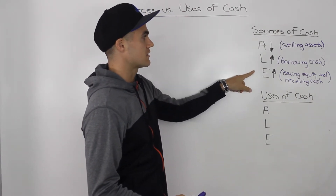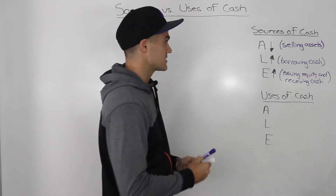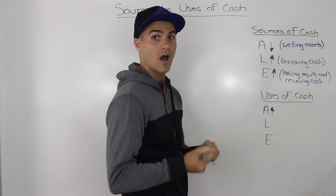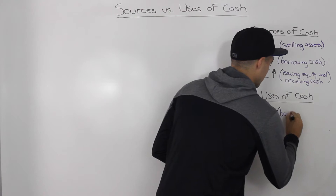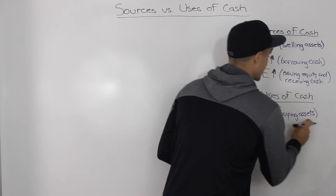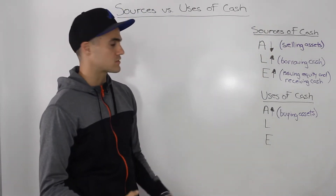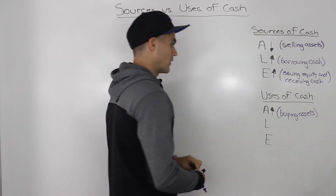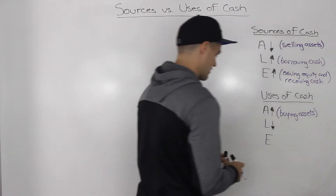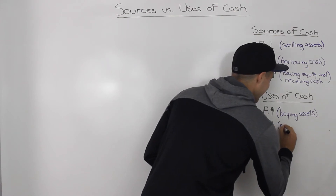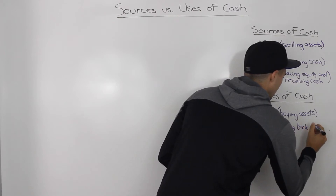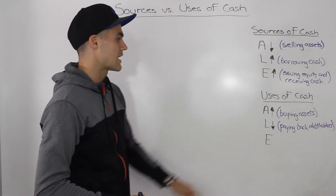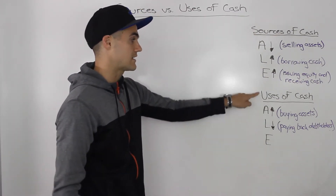Uses of cash are just basically the opposite. For assets, when assets go up, that is a use of cash. What's happening is you are buying assets, and you assume that you are buying assets for cash, hence you are spending cash. For liabilities, when liabilities go down, that is a use of cash, because you are paying back debt holders or paying back your liabilities. Hence, when liabilities are going down, you are using cash to do that.